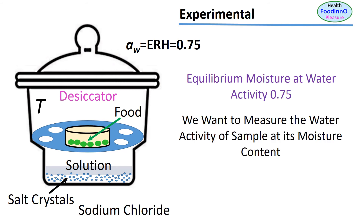We want to measure the water activity of the sample at its original moisture content. This method has this problem — we want to measure the water activity of the sample, not the equilibrium moisture content at 0.75.